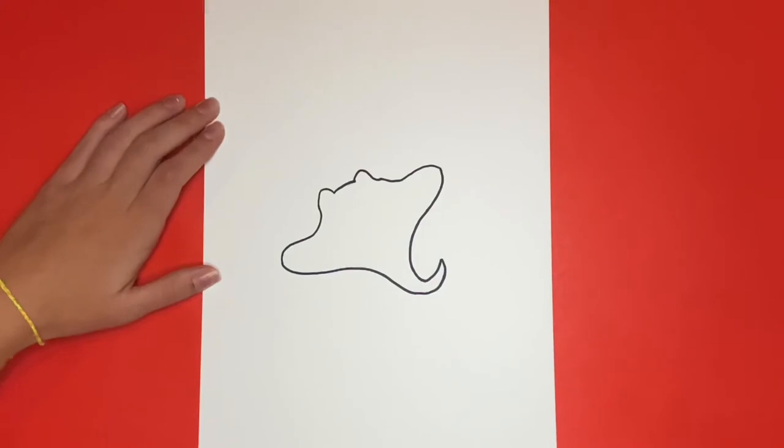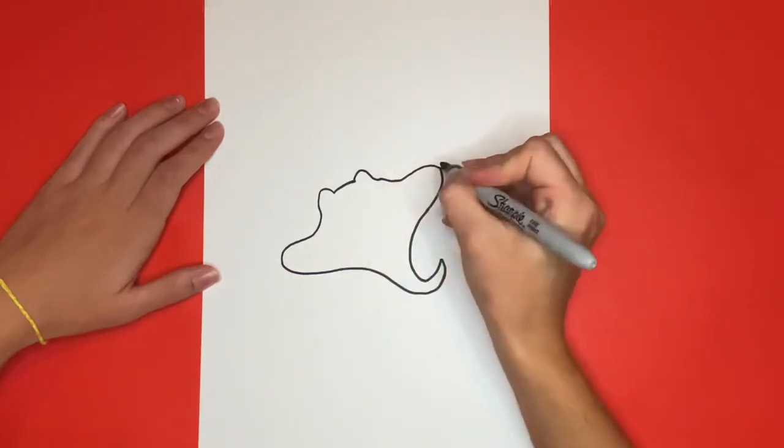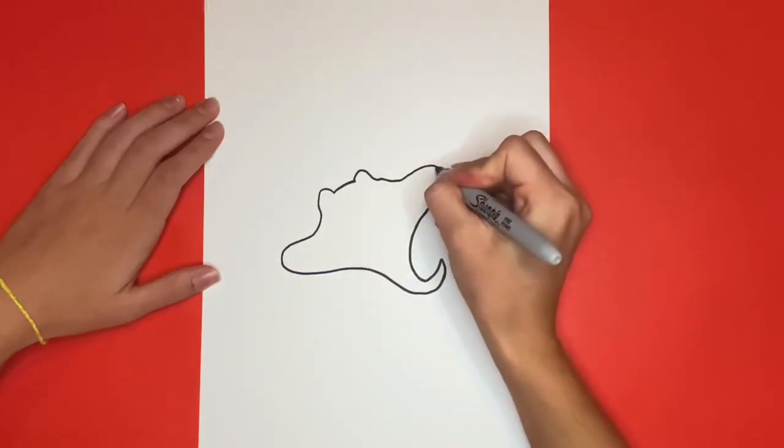Make sure to stick around until the very end so that we can color in our drawings together. Now we're going to draw a curvy line going all the way across our stingray's body towards the top.